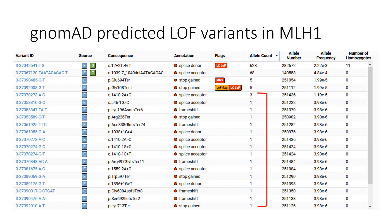Since gnomAD doesn't automatically exclude someone who may have had an adult onset cancer, they could still be phenotypically affected and present in the gnomAD cohort, especially since one of the studies that contributes to gnomAD is the Cancer Genome Atlas, or TCGA.